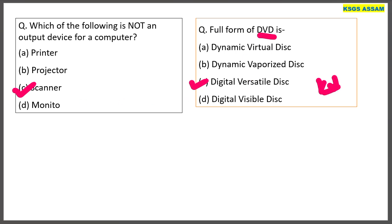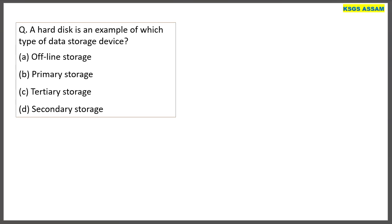The next question: a hard disk is an example of which type of data storage device? A hard disk is a secondary storage device. This covers primary memory and secondary memory.